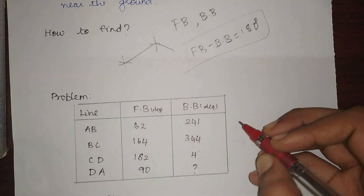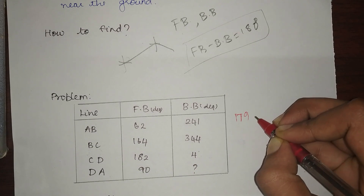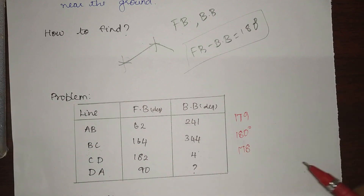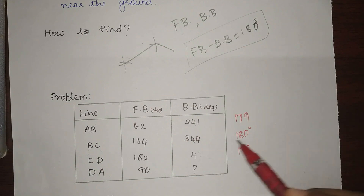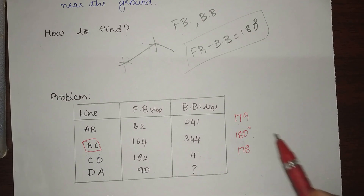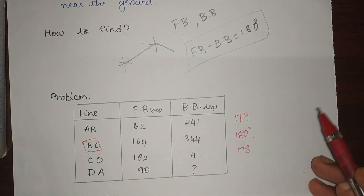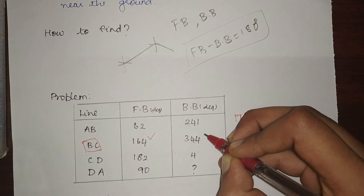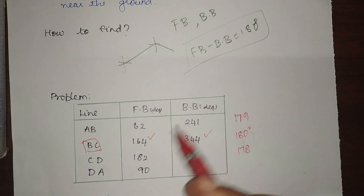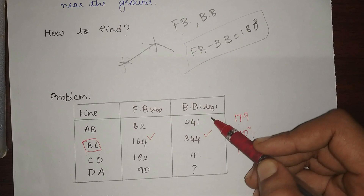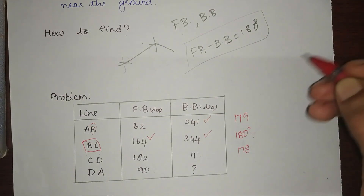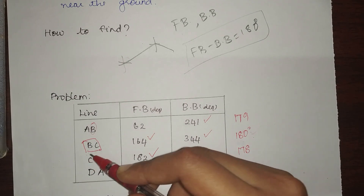For line AB: 241 minus 62 equals 179 — not equal to 180 degrees. For line BC: 164 minus 344, the difference is 180 degrees. For line CD: 182 minus 4 equals 178 degrees. Since the difference for BC is 180 degrees, line BC is free from local attraction, which means both stations B and C are free from local attraction. Therefore, the back bearing of AB (which involves B) and the fore bearing of CD (which involves C) are also correct values.